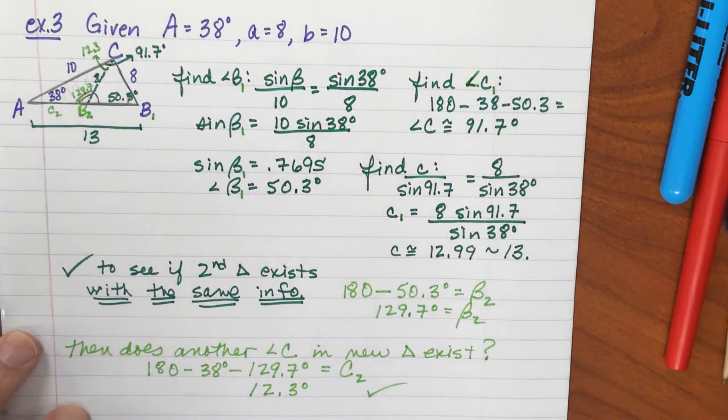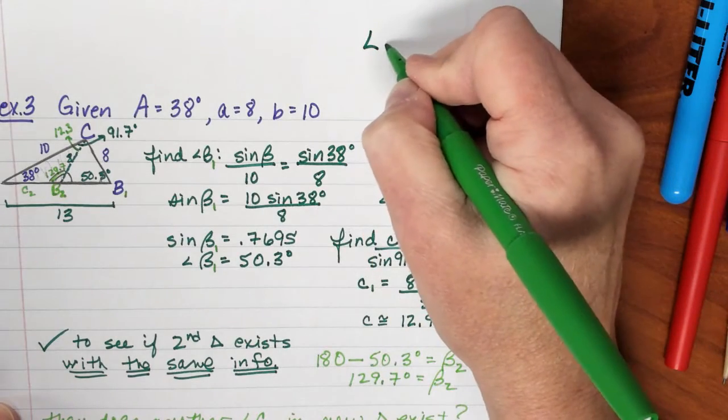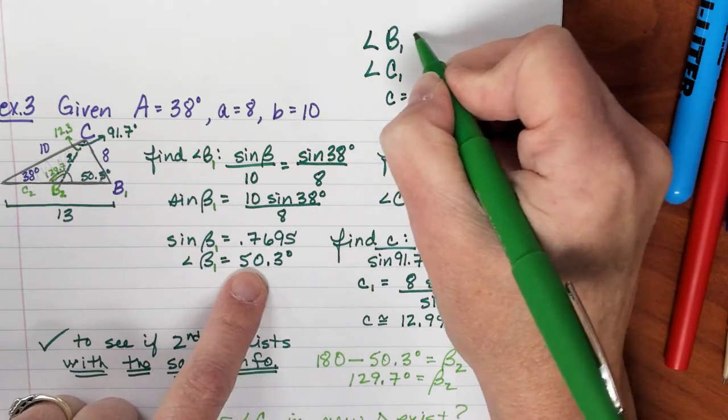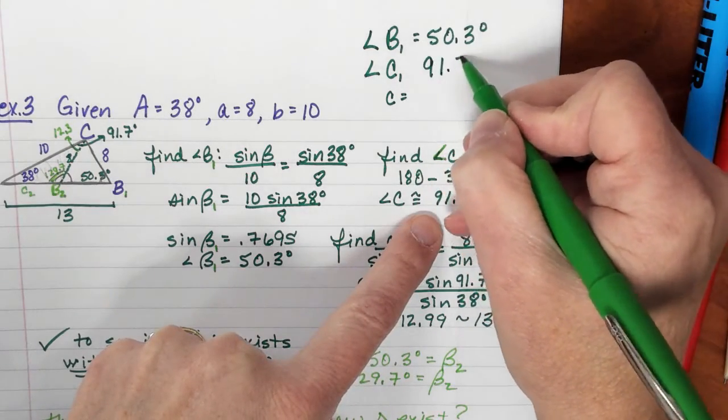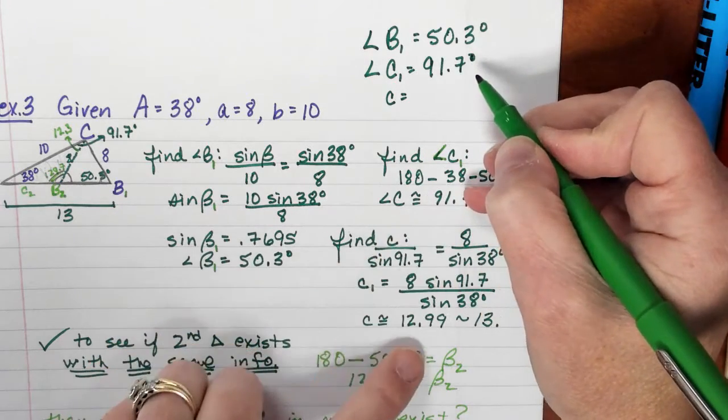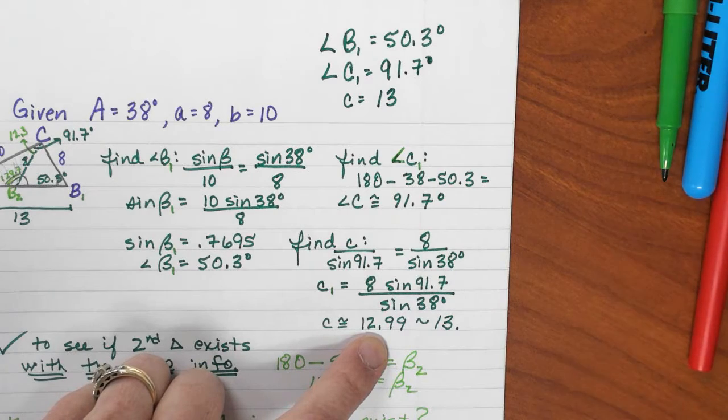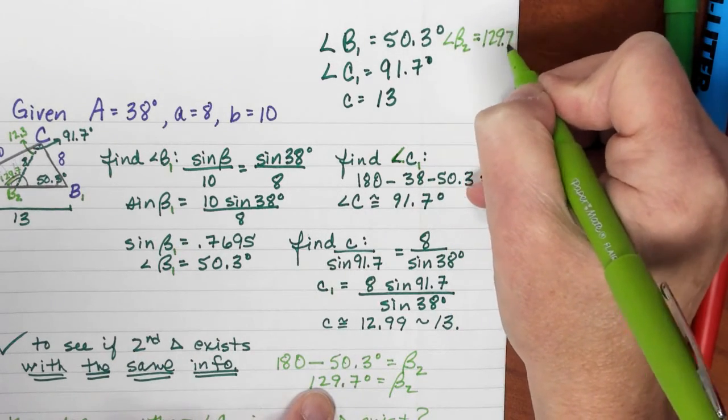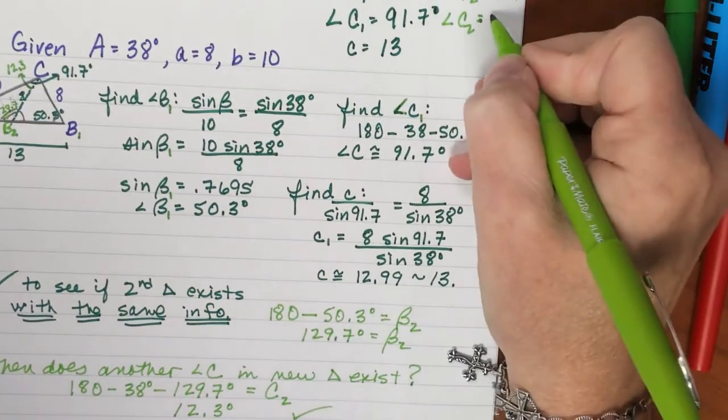And sometimes what you'll see on your paper, right now we can fill in most of these. So, I'm going to go ahead and do this. You will see the first triangle. So, for big angle B1, angle C1, and little C, the side. We found angle B to be 50.3. We found angle C to be 91.7. And we found side C to be 13. Well, then you can find angle, and we did this, angle B2, we determined was 129.7. We determined that C2 was, down here, 12.3.